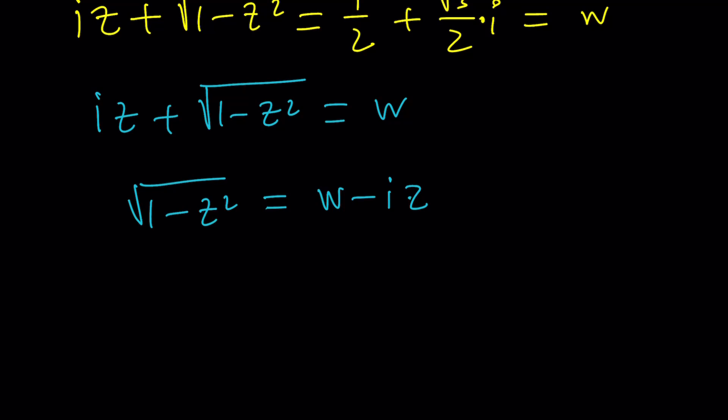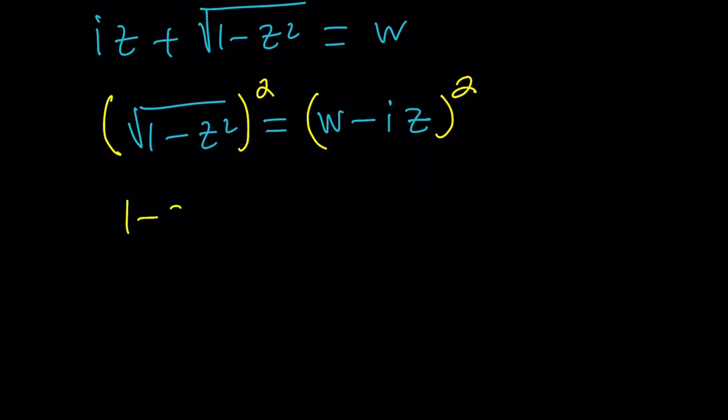Now let's go ahead and set this equal to w. It's one of the cube roots of unity. So I set it equal to w to make it a little easier for my work. And now we're going to go ahead and isolate this. Let's write it as iz plus the square root of 1 minus z squared equals w. And now we want to isolate the radical so we can square both sides. And something interesting is going to happen when you square both sides.